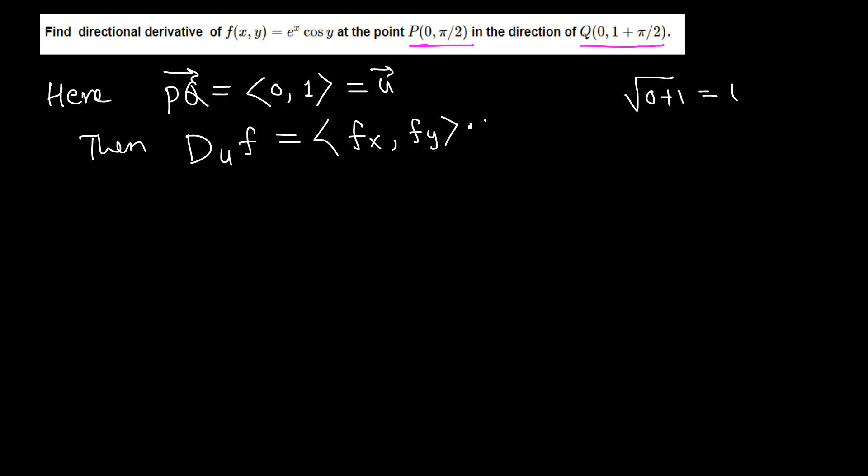Okay, so our function is f(x) = e^x cos y. To find the derivative with respect to x, cosine y behaves like a constant and derivative of e^x is just e^x, so we get e^x cos y.